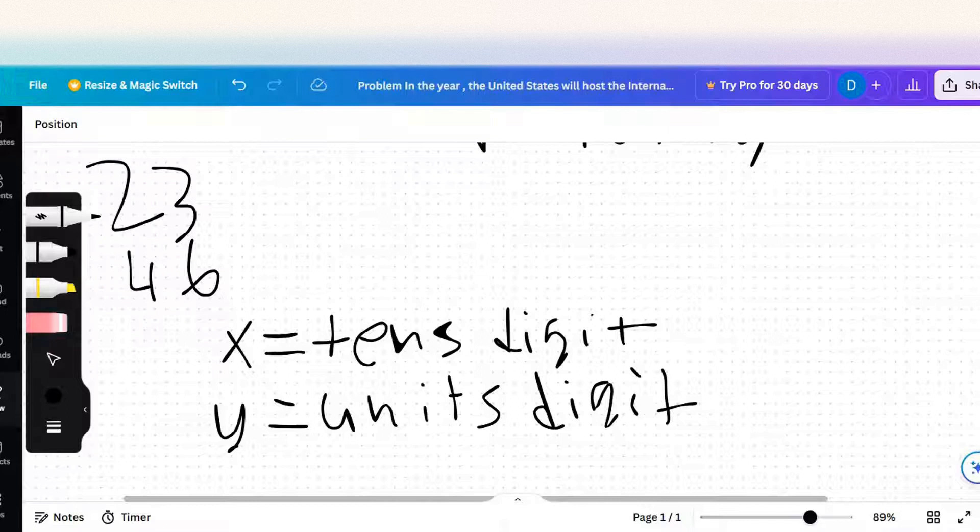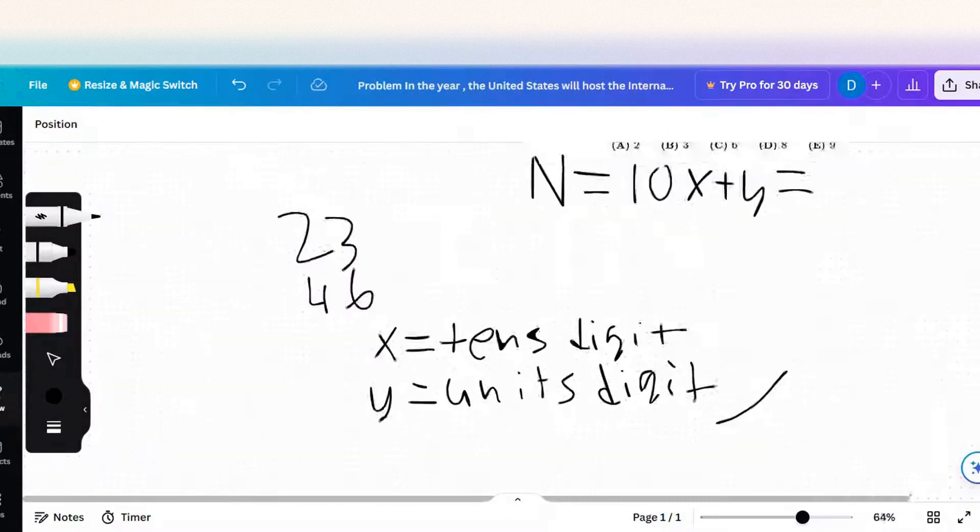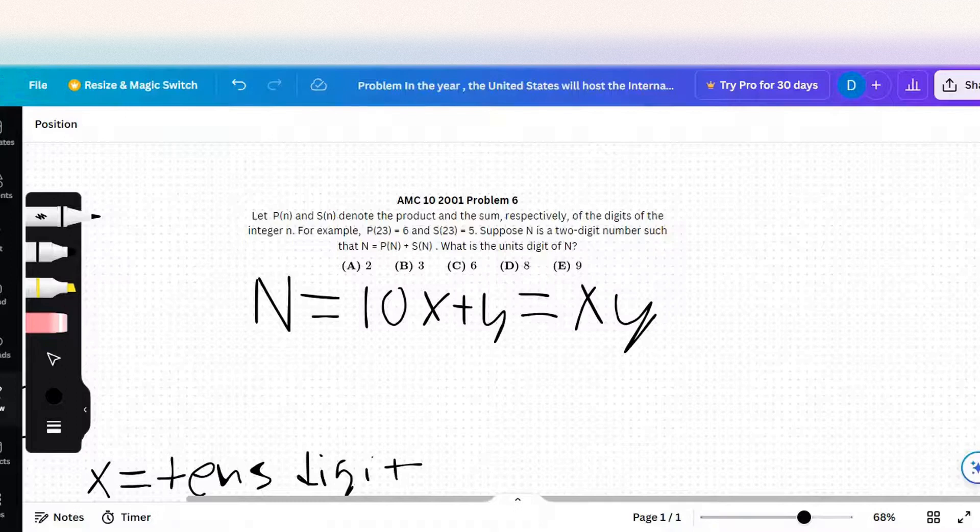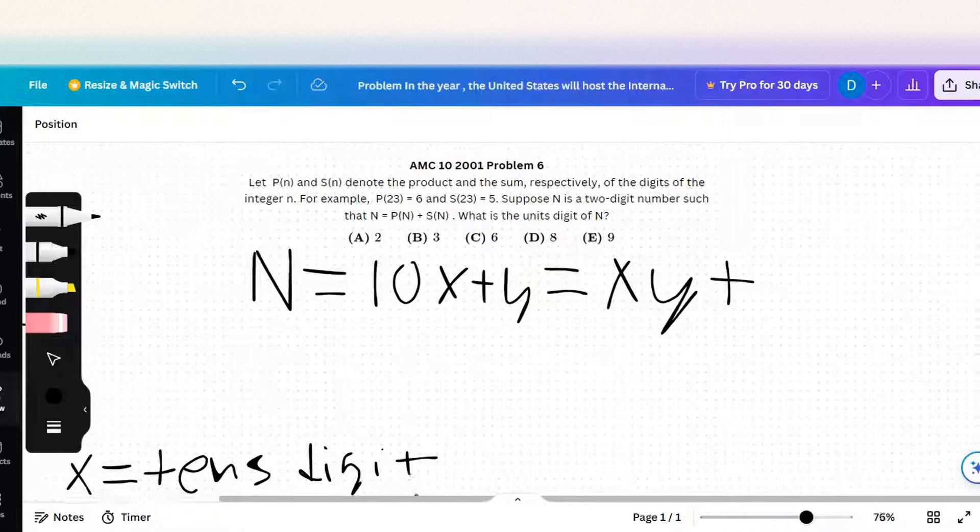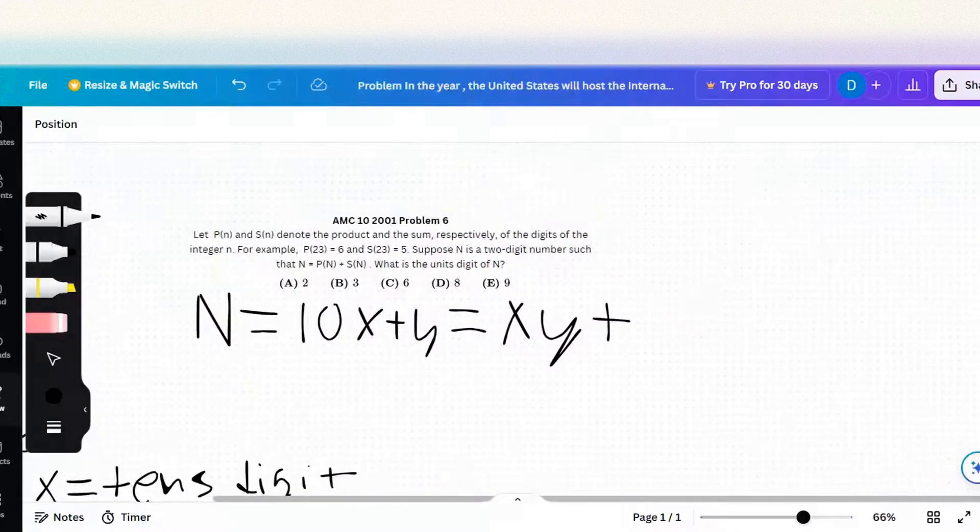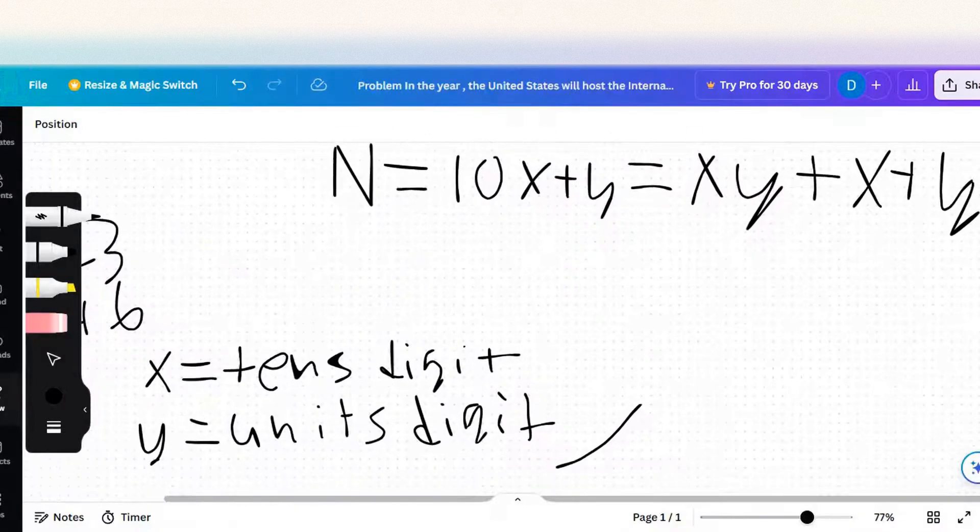We have the tens digit and the units digit. What is their product? Product xy, or just multiply. It also says it's added to the sum of the digits. That's easy, it's just x plus y. That's the sum of the digits.